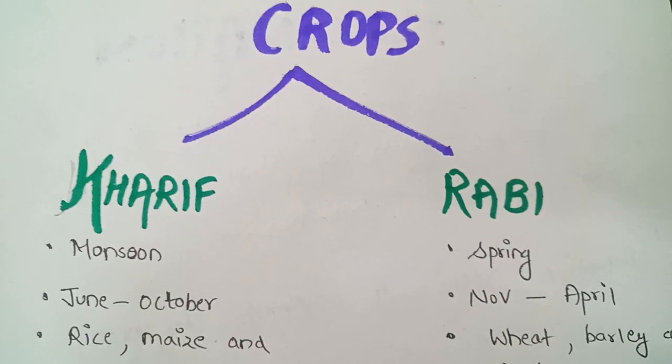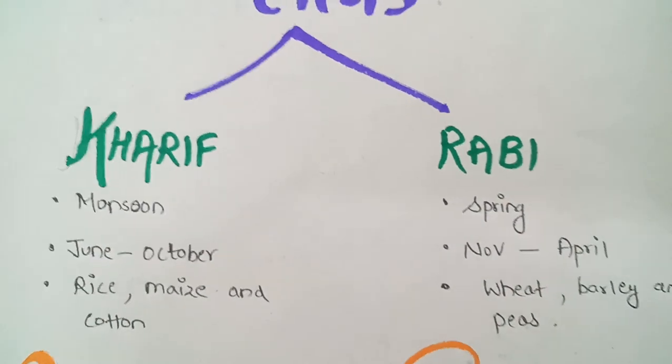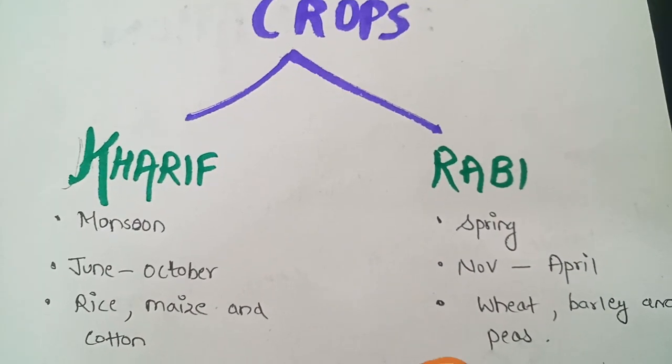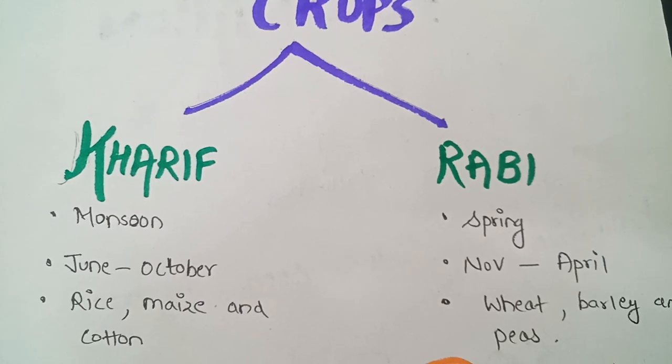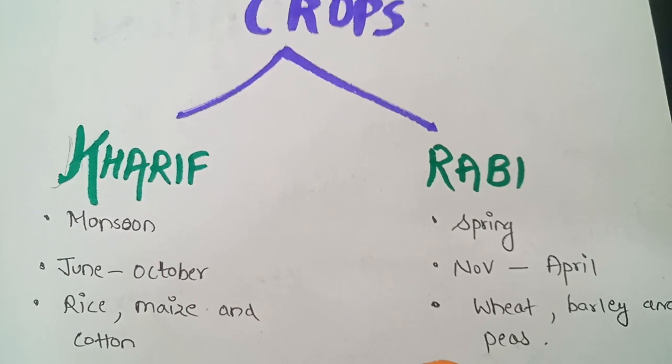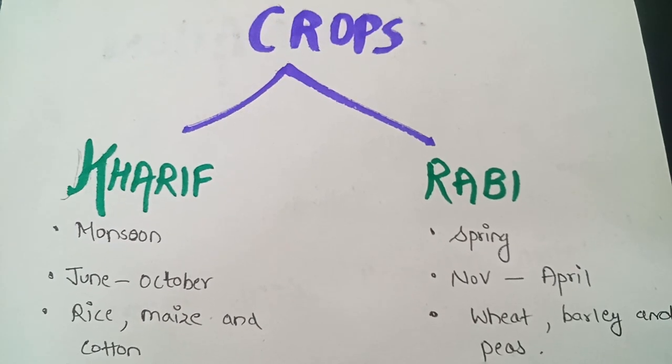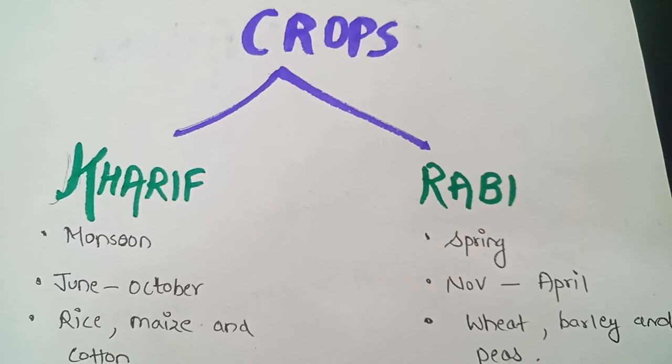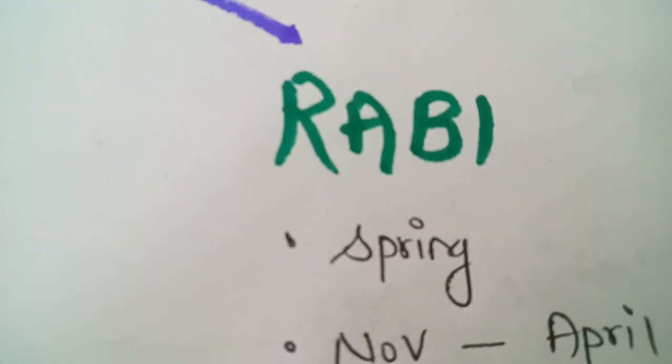Kharif crops and Rabi crops. Crops that are grown usually during monsoon season, they are known as Kharif crops. And the crops that are grown after monsoon season, they are known as Rabi crops. We can also call it as Spring crops.